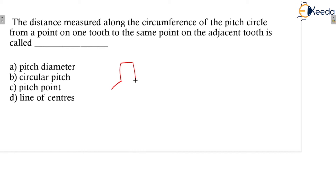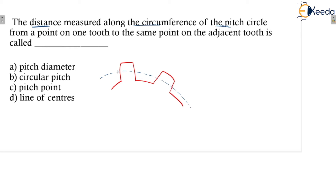If you see the diagram you will be able to understand what it is asking. It is asking the distance measured along the circumference of the pitch circle from one point — for example, this is the pitch circle — measured from one point on one tooth, say this point here, to the same point on the adjacent tooth.